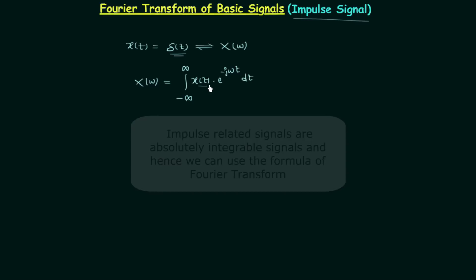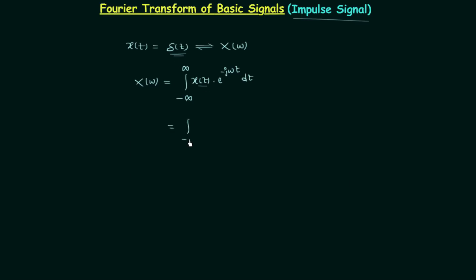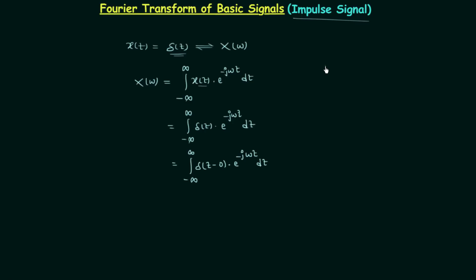Since x(t) = δ(t), we have the integral from minus infinity to infinity of δ(t) multiplied by e^(−jωt) dt. We can write δ(t) as δ(t − 0). Now, recalling an important property of the impulse signal: if there is an impulse signal δ(t − t₀) multiplied by a signal x(t), the result is x(t₀) multiplied by δ(t − t₀).